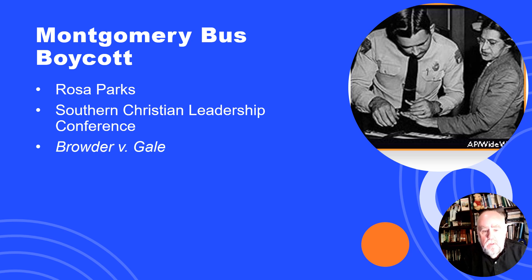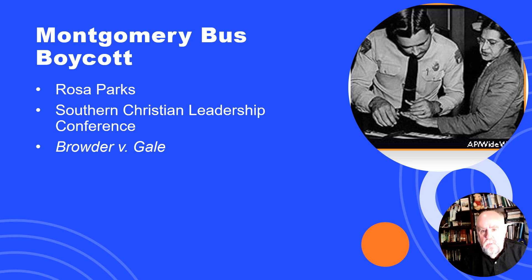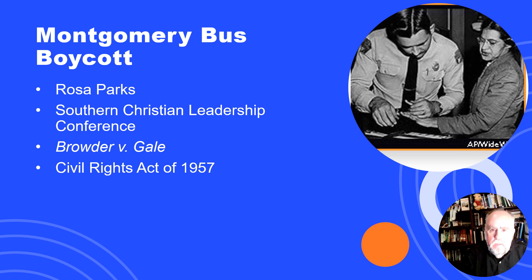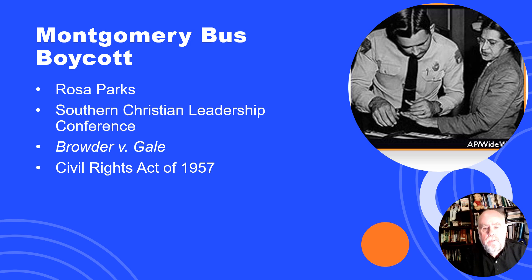You have to explain what that organization was about and what they were setting out to do. What is also important is the success of using nonviolent protests in the Montgomery Bus Boycott. It also helped in the Supreme Court case of Browder v. Gayle, striking down the law of discrimination when it came to desegregating buses. You may also want to include the Civil Rights Act of 1957 — understand that all acts of Congress are capitalized, so make sure you do that.